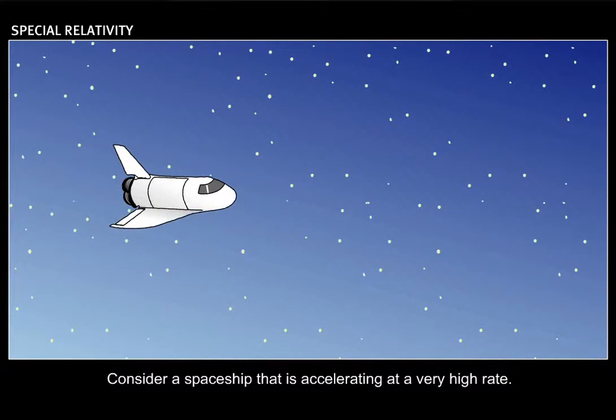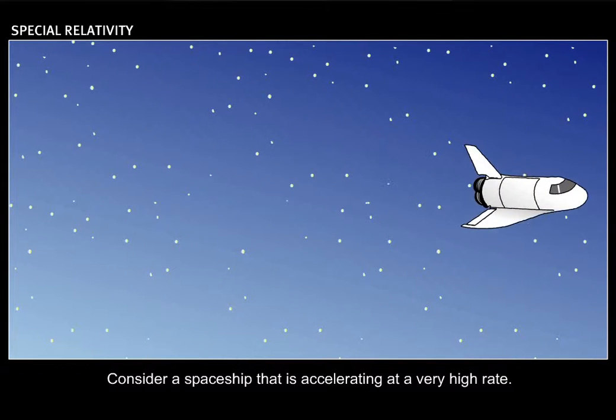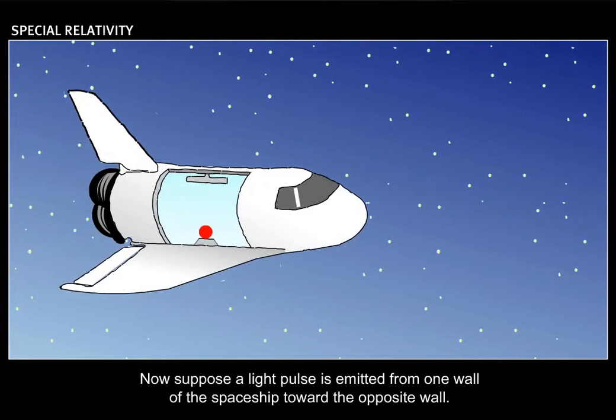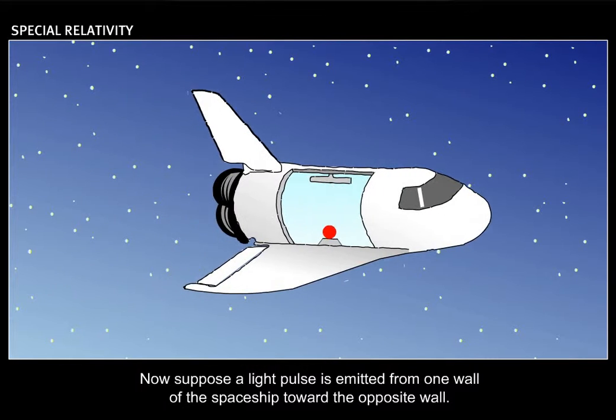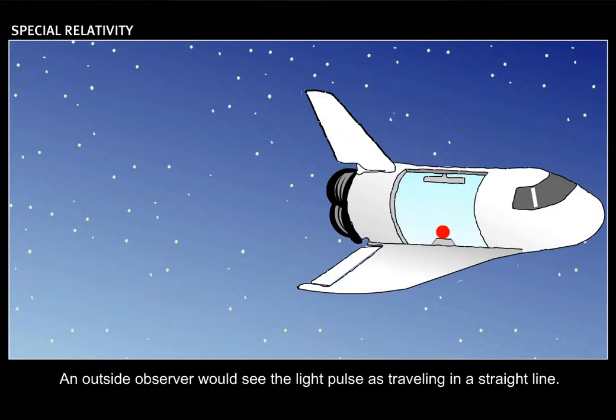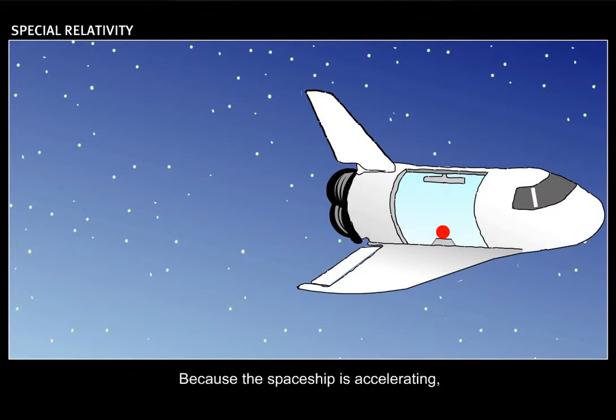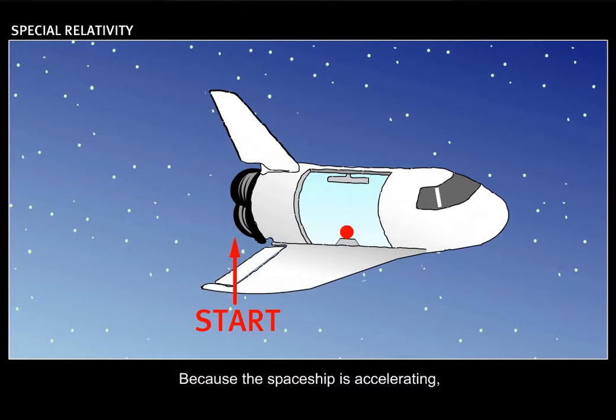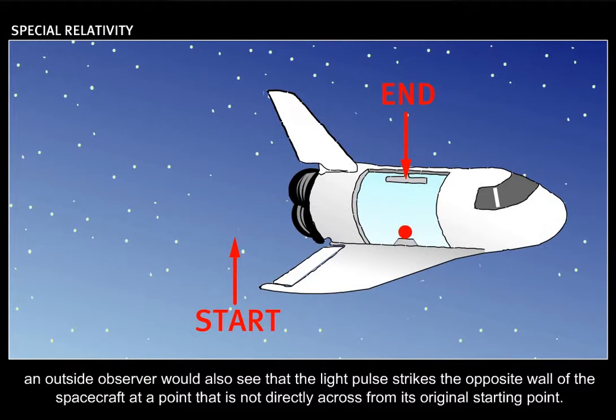Consider a spaceship that is accelerating at a very high rate. Now suppose a light pulse is emitted from one wall of the spaceship toward the opposite wall. An outside observer would see the light pulse as traveling in a straight line. Because the spaceship is accelerating, an outside observer would also see that the light pulse strikes the opposite wall of the spacecraft at a point that is not directly across from its original starting point.